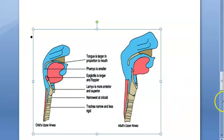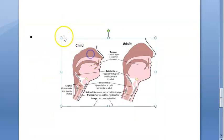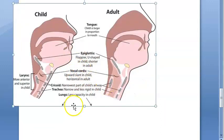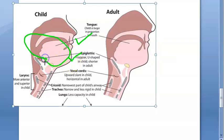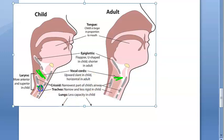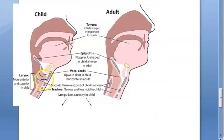Looking at another child-versus-adult diagram: the tongue is large in the child; the epiglottis is floppier and U-shaped in the child, shorter in the adult. The child has a big, floppy epiglottis. The vocal cords slant upward in a child, but in adults they are more horizontal. The cricoid is the narrowest part in a child's airway, and the trachea is very narrow and less rigid.